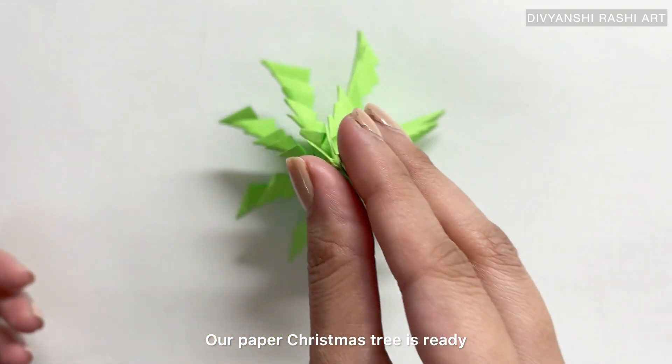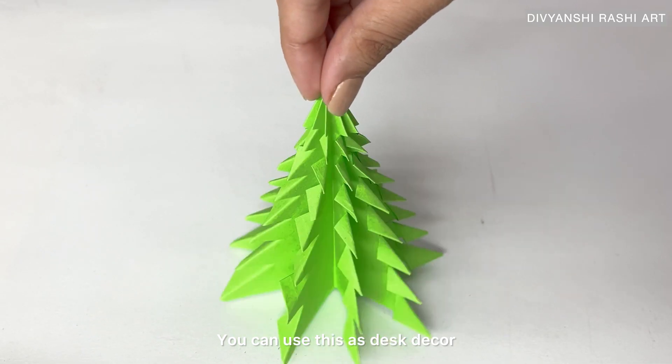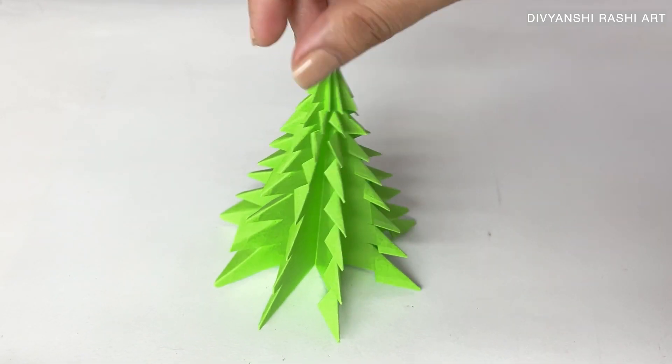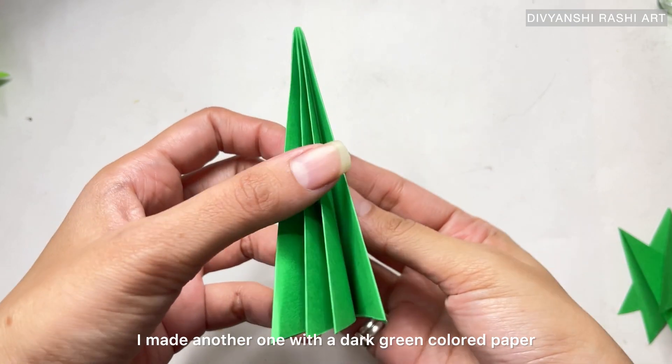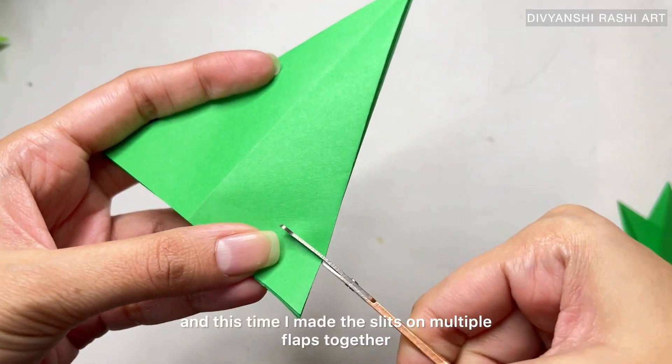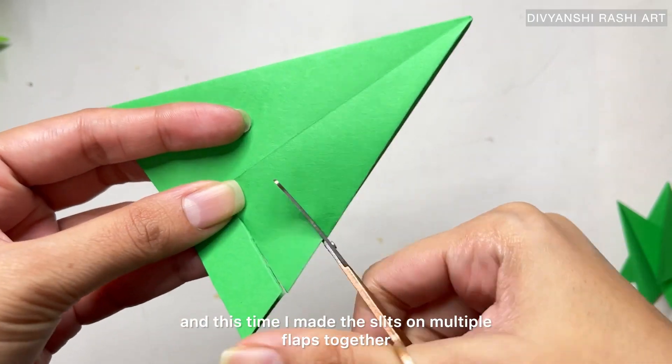I made another one with a dark green colored paper, and this time I made the slits on multiple flaps together. It makes the cutting part quick, but it tends to get a little tricky when you try to separate them from each other.